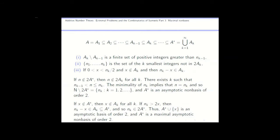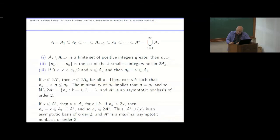But what about the original question? The original question was: is it the case that every asymptotic non-basis must be contained in a maximal non-basis? About this time I gave a colloquium talk somewhere, and I mentioned this problem. There was a guy in the audience who did functional analysis — he didn't know any number theory at all, but he studied sequence spaces. He thought about this, and a couple of weeks later he was actually able to prove that not every non-basis is contained in a maximal non-basis.